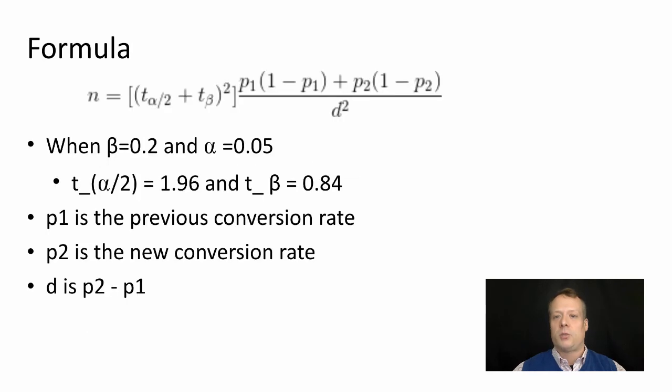How do we actually use all those numbers? There's a formula that takes statistical power and significance and you square that value to give you a multiplier for how many examples you need. Then you take the variance of the baseline population (p1 times 1 minus p1) and the variance of the population you're trying to achieve (p2 times 1 minus p2), and divide by the difference squared. When we set beta at 0.2 and alpha at 0.05, t of alpha over 2 is 1.96 and t of beta is 0.84, so we can put in a constant of about 8. p1 is the previous conversion rate, p2 is the new conversion rate, and d is the difference between them.